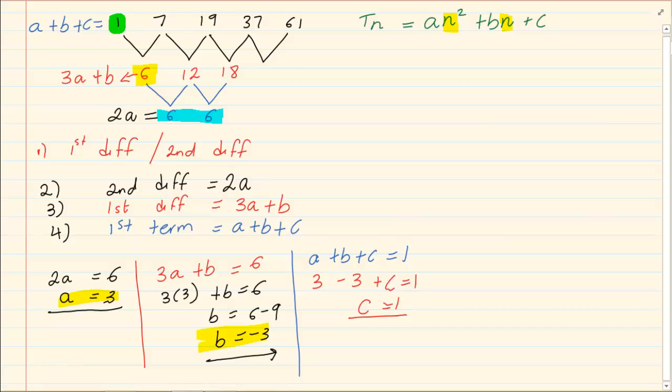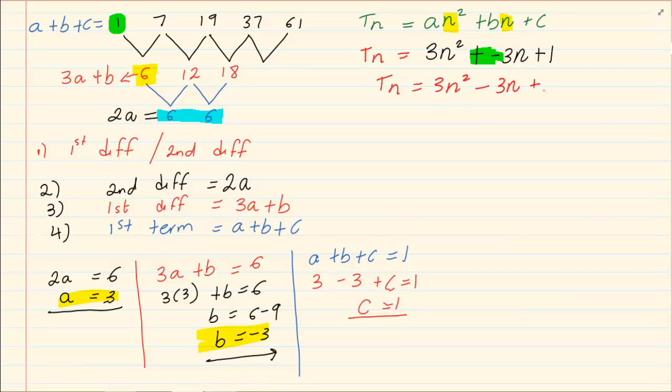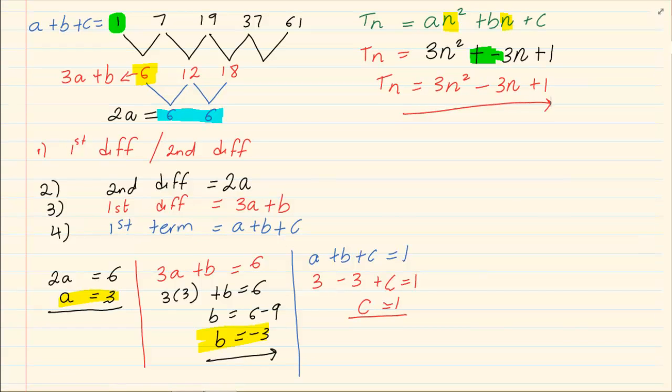So what was a? A was 3. So we have 3n squared plus. What was b? b was minus 3n. And then what was c? Plus 1. Now because we have a plus and a minus next to each other, we know that a plus and minus next to each other gives us a minus. So our final equation is 3n squared minus 3n plus 1.